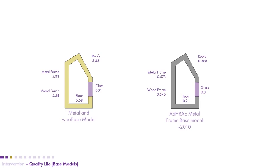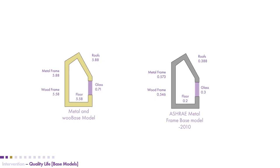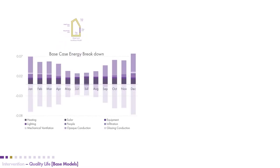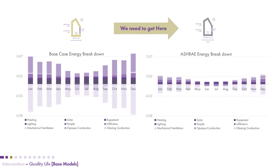We started with our base model: the typical construction approach using metal or wood-based containers combined with lightweight construction. Comparing this to the ASHRAE standard, we noticed the energy breakdown of our building had a lot of losses and heat gains that could be reduced to move toward the ASHRAE recommendation. We needed to decide which room was most affected by these discomforts and use that as our sample space to benchmark the building's improvement going forward.